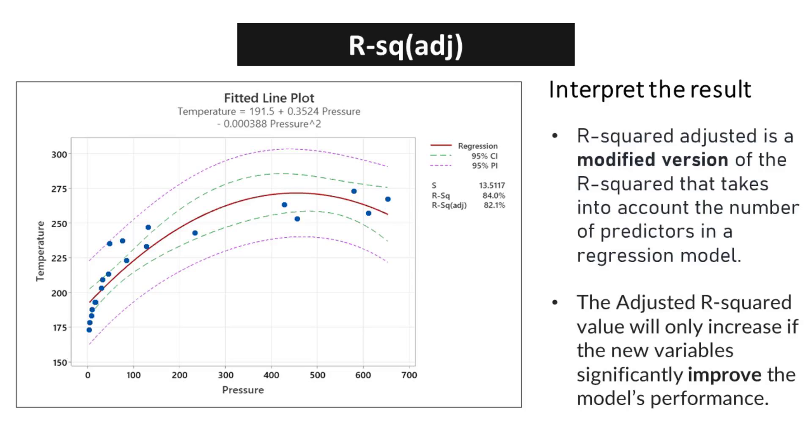The adjusted R-squared value will only increase if the new variables significantly improve the model's performance. This means that we need to be mindful of the variables we include in our regression models, ensuring that they truly enhance the predictive power of the model.